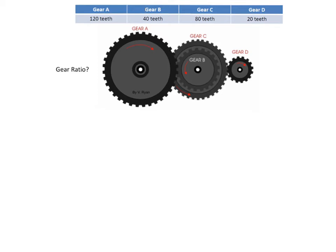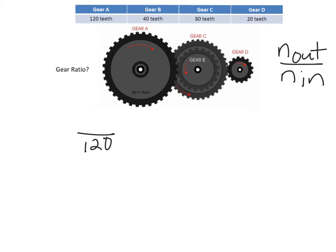Gear A is going to be our driving gear, and gear D is our final driven gear. Since we're just looking for gear ratio and I have number of teeth given, I'm going to use N-out over N-in. Gear A is my N-in, so I'm going to put 120 on the bottom, and on the top I'm going to put 40, since it's meshed with gear B.